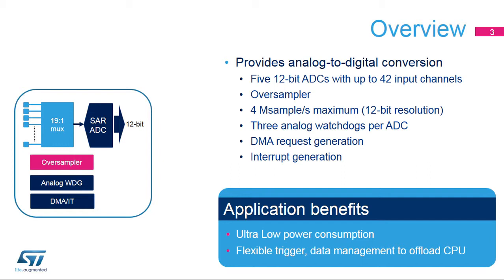There are 42 analog inputs available across the five ADCs. The oversampling unit pre-processes the data to offload the main processor. It can handle multiple conversions and average them into a single data with an increased data width up to 16 bits. The ADC module itself is a 12-bit successive approximation converter with additional oversampling hardware. The sampling speed is 4 mega samples per second for 12-bit resolution. The data can be made available to the software either through DMA transfers or interrupts. This ADC is designed for low power and high performance, with triggering mechanisms and data management configured to minimize CPU workload. The ADC module also integrates an analog watchdog.